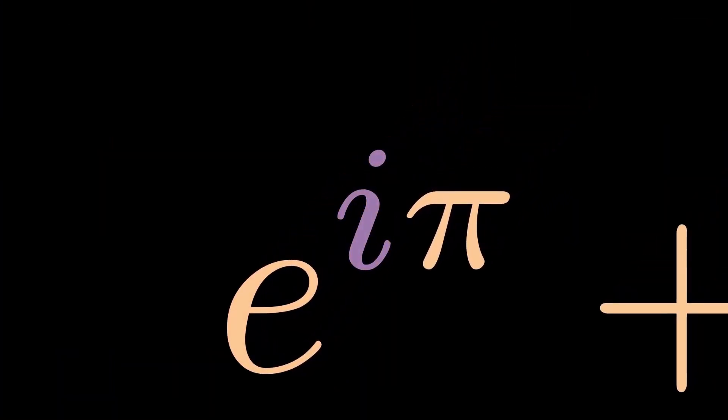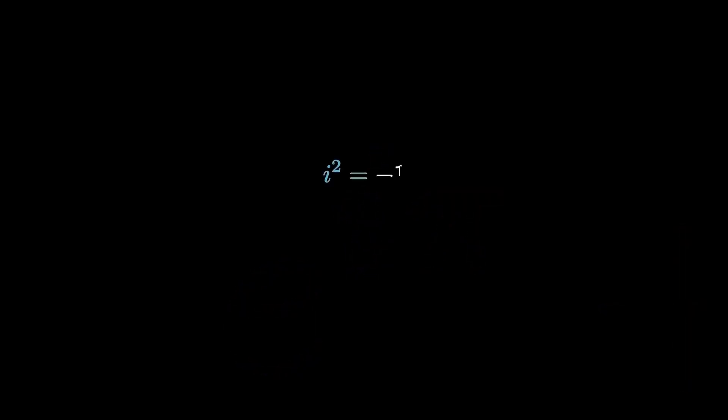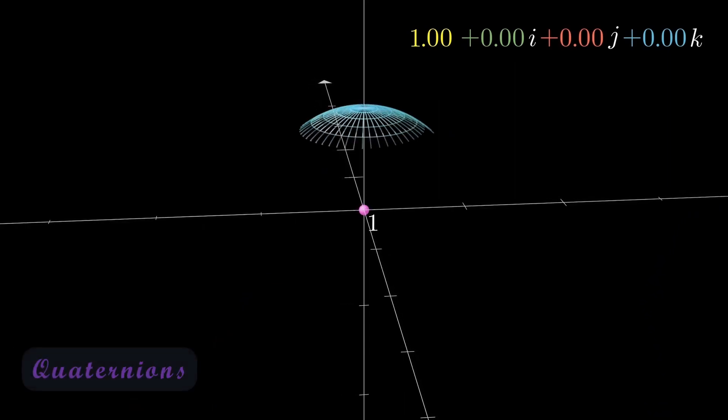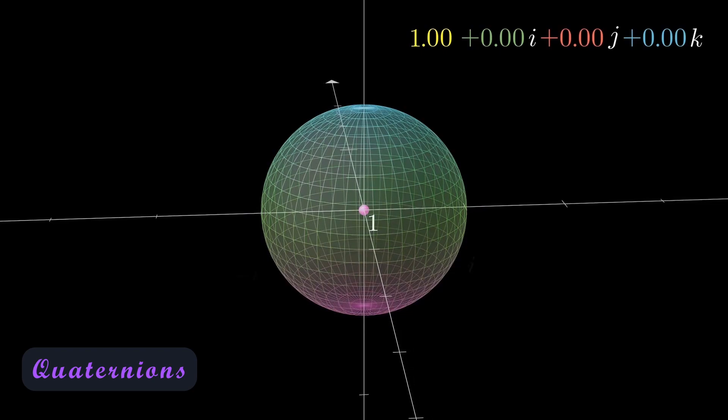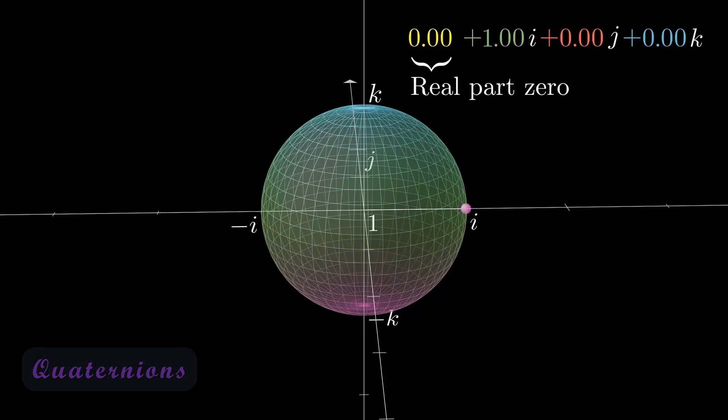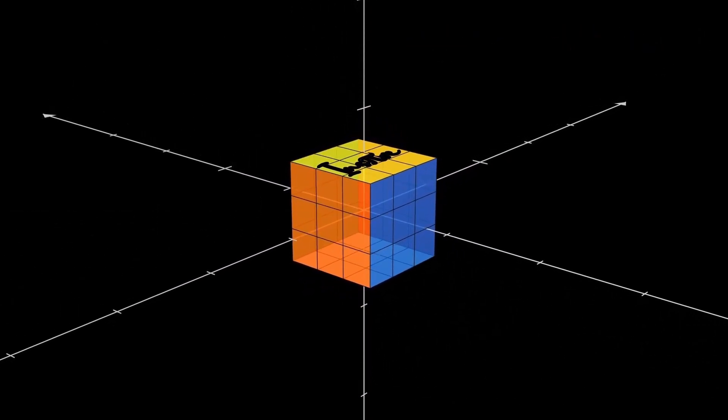Let's talk about the imaginary unit i. From being one of mathematical confusion to being absolutely important in today's mathematics. For example, quaternions, a number system that was used to extend the complex plane, and at the heart of quaternions is nothing but the imaginary unit i.